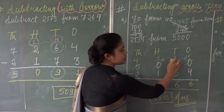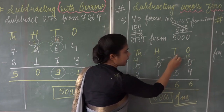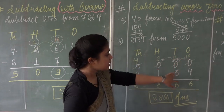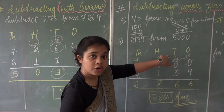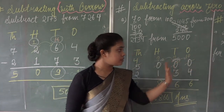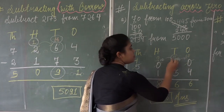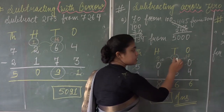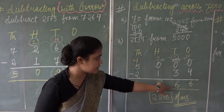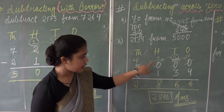Since 1 was given away there, that position becomes 9. You subtract 3 from 9 — not from 10 — because when you borrow something and give it away, remember what is left. So 9 minus 3 is 6.